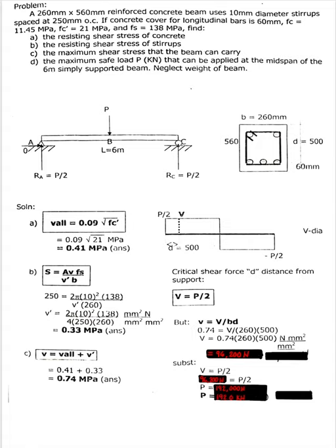Okay class, good afternoon. Let's have another example for beam shear stress. You have this problem: a 260 mm by 560 mm reinforced concrete beam uses 10 mm diameter stirrups spaced at 250 mm on center. The concrete cover for longitudinal bars is 60 mm. Given: fc is 11.45 MPa, fc prime is 21 MPa.